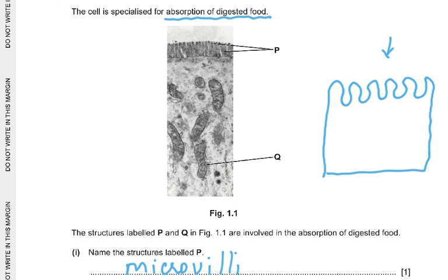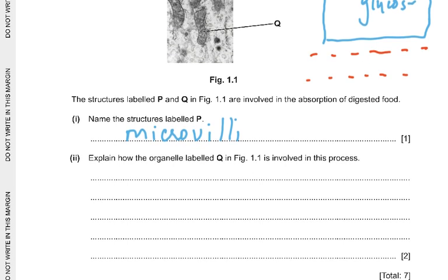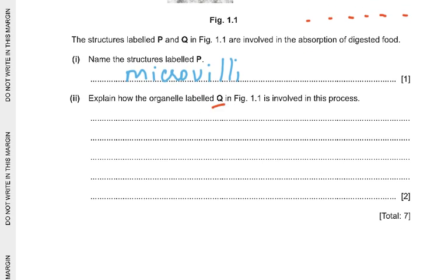For example, starch is digested to glucose, and the glucose has to enter the cell and then the bloodstream. We covered this in O levels as absorption. The question asks: explain how the organelle labelled Q is involved in this process. Q is the mitochondria, but just naming it won't get marks.